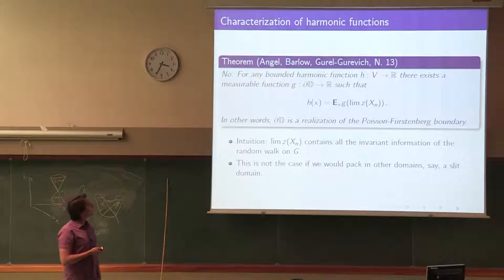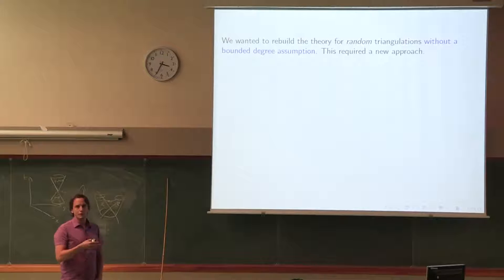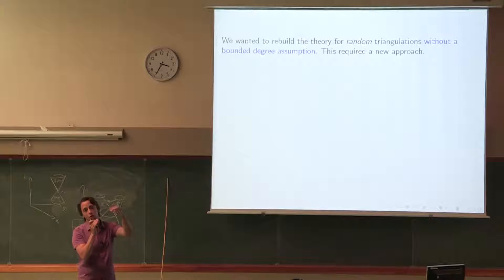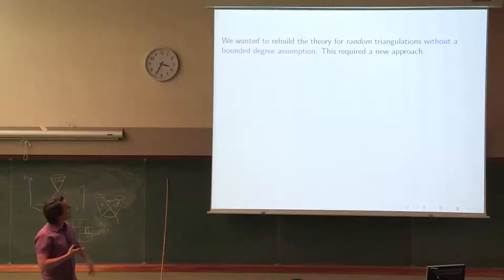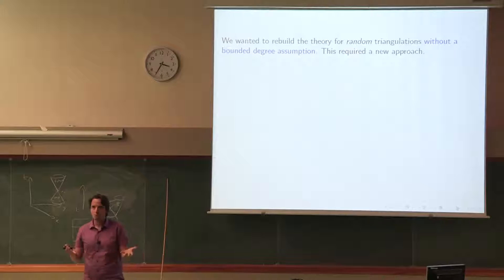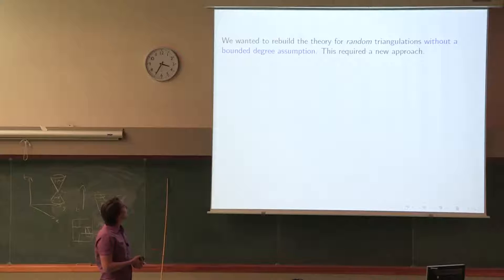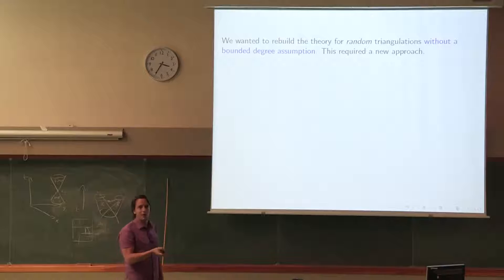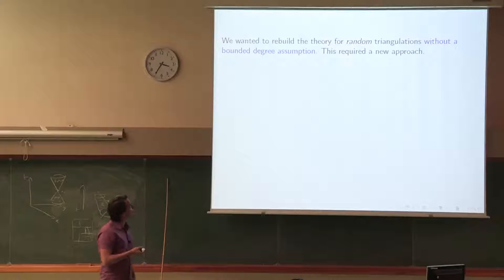All of this theory is nice and reflects the continuous theory, but it only works when you have bounded degree. When you're allowed to add drifts whenever you want, you can create pathologies. But of course we want to deal with random triangulations in which the degree is not bounded. Somehow it's random — a random triangulation will not choose a particular direction to have a drift, and all the drifts or defects in curvature should somehow cancel out.